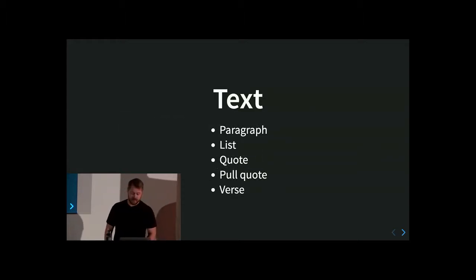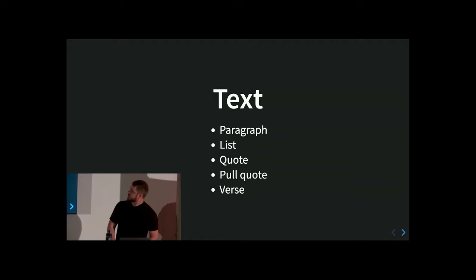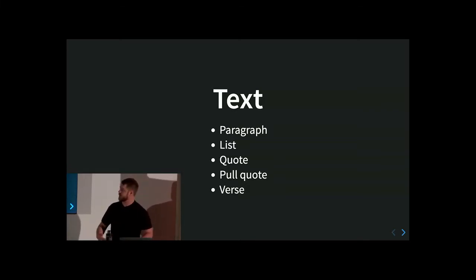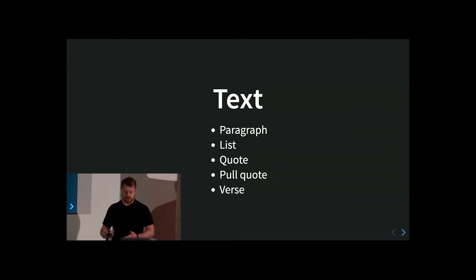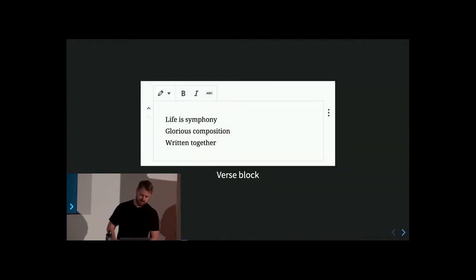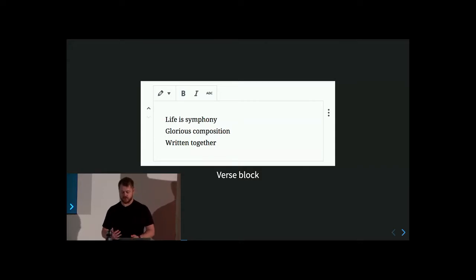Then we have text blocks. The paragraph block is actually very foundational to Gutenberg — we start with a paragraph block and often our next block will also be a paragraph block. Then we have lists — unordered and ordered lists like you have in HTML. We have quotes for attributed quotes, so you can offer a quote and say who it came from. We have pull quotes, which allow us to take quotes out of articles and entice potential readers. And then the verse block, which I was very glad to see. We talk a lot about 'code is poetry,' and it's nice to be able to write actual poetry in WordPress in a block. The verse block is similar to a paragraph but has different interactions — when you hit enter, it doesn't go to a different paragraph, so you can write verse a little more cleanly.